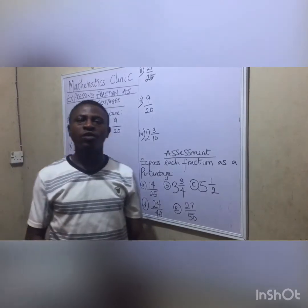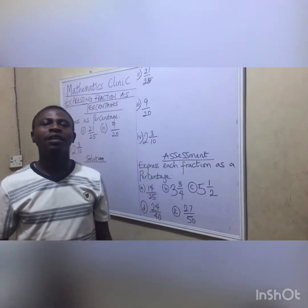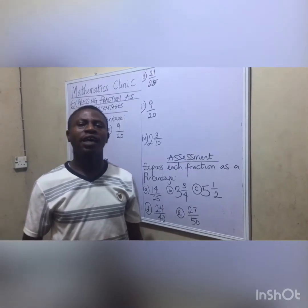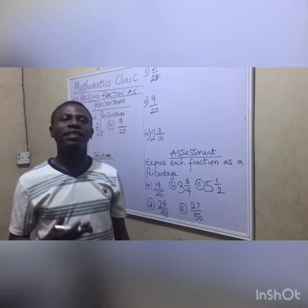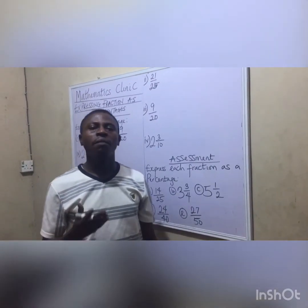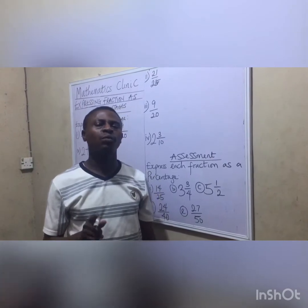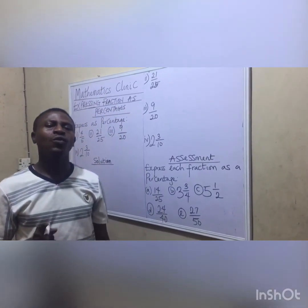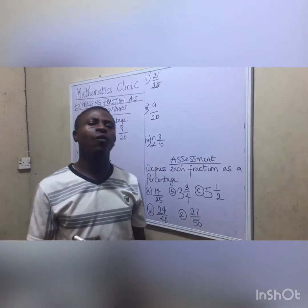Hello, and welcome to another edition of Mathematics Learning. In our previous class, we talked about percentage. I told you the meaning of percentage. Percentage is derived from two words: 'per' and 'cent'. 'Per' simply means out of, while 'cent', from the word century, means 100. So percentage simply means out of 100.